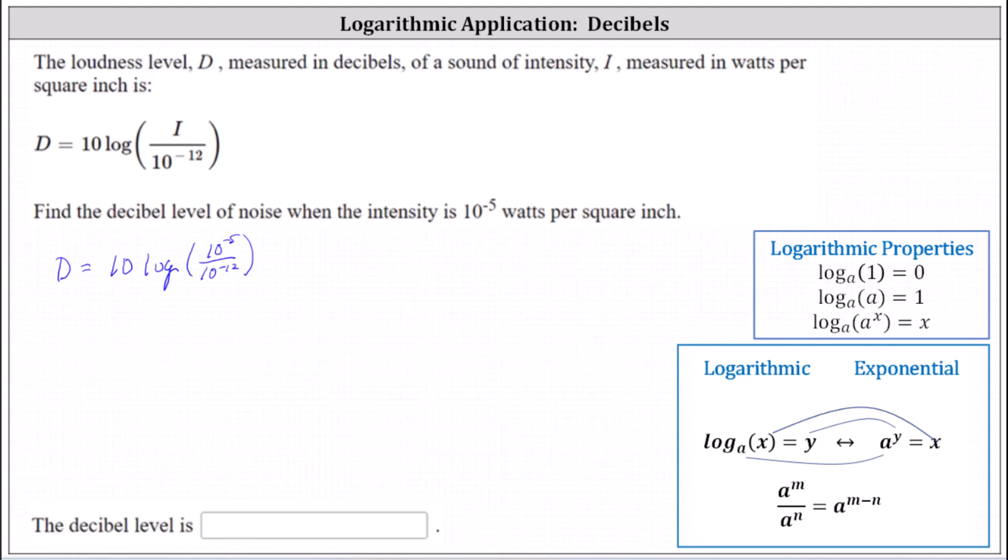Let's go ahead and simplify the quotient. I've included the exponent property below. Notice when we're dividing and the base is the same, we subtract the exponents. 10 to the power of negative 5 divided by 10 to the power of negative 12 equals 10 to the power of negative 5 minus negative 12, which simplifies to 10 to the power of negative 5 plus 12, which equals 10 to the power of 7.